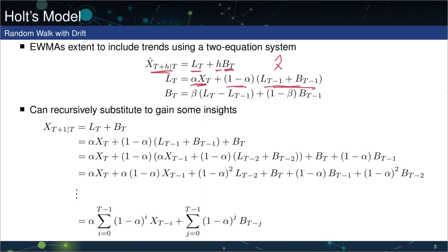In fact, this value here is X-hat T given T minus 1 — that is, this is the forecast we had at time period T given the information at T minus 1. So it depends on these two things.